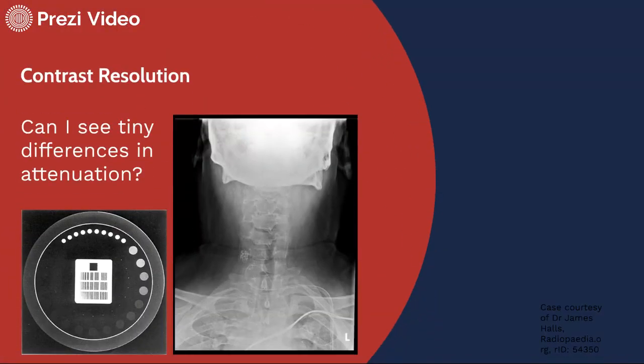Contrast resolution asks the question, can I see tiny differences in attenuation? We look at the CT phantom and see these tiny shifts in attenuation values as we look at these small circles on the outside of the phantom. If we're looking at an x-ray image, I found this case study interesting. What we see here is a surgical sponge that was left in the patient, and we do a soft tissue neck study. In this case, what we do is we turn down the KVP in order to enhance the contrast on this image.